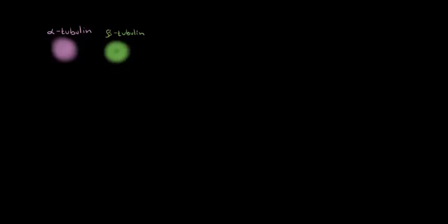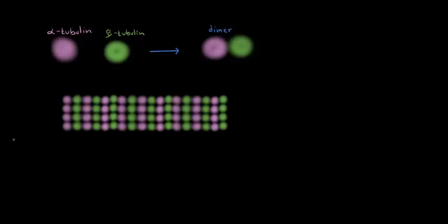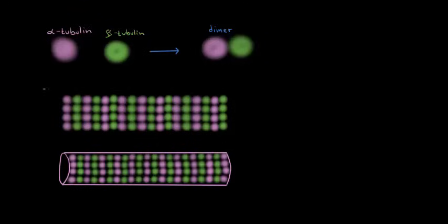Let's talk about microtubules in more detail. First we'll discuss the structure. Microtubules are made up of two proteins: the first is called alpha-tubulin, and the second, similar protein, is called beta-tubulin. The alpha-tubulin and beta-tubulin join together to form a dimer — a dimer is simply when you have two similar or identical molecules put together. These dimers form long chains or polymers, the polymers are put together into a sheet, and that sheet is rolled up to form a tube — and that is a microtubule.